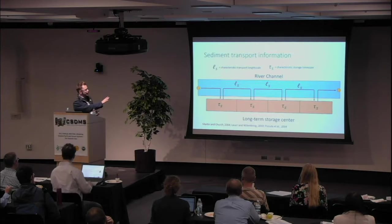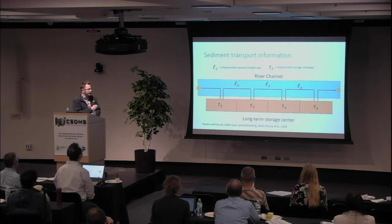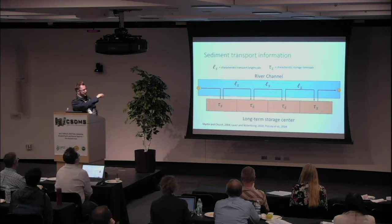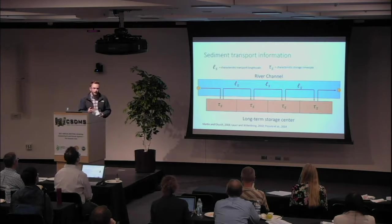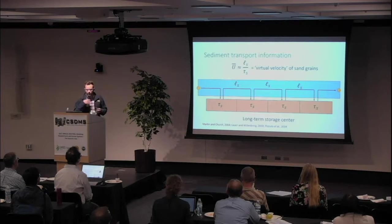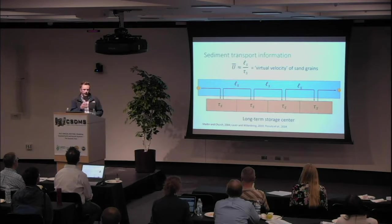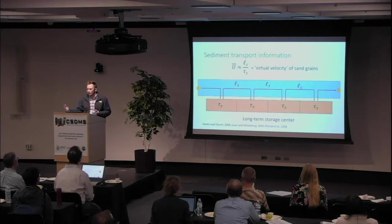I've shown it simply up here. This sort of LS — this characteristic transport length scale — and this sort of tau S — this storage time scale — are both based on probability distributions in terms of grains moving from place to place. The one thing of sediment transport that I'm interested in is this virtual velocity. If we take the ratio between these two, we can get a rough approximation of a time-averaged velocity of the grain moving through a system.